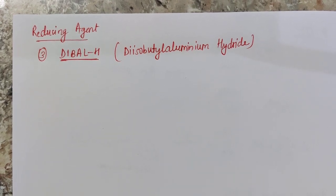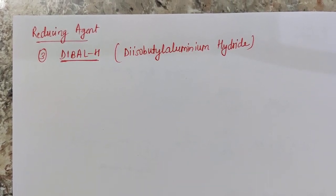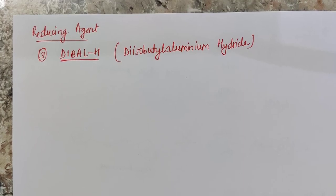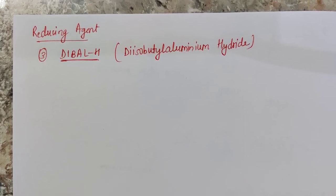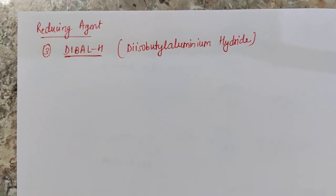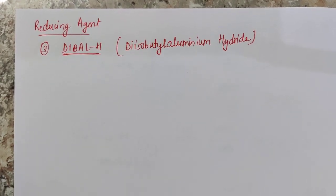The reducing agent that we have to study is DIBAL-H, that is diisobutyl aluminum hydride. If we talk about the structure,